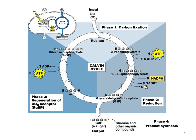Here is a general diagram of the Calvin cycle. As I mentioned earlier, it has four stages: carbon fixation, reduction, regeneration of the carbon dioxide acceptor, and product synthesis.